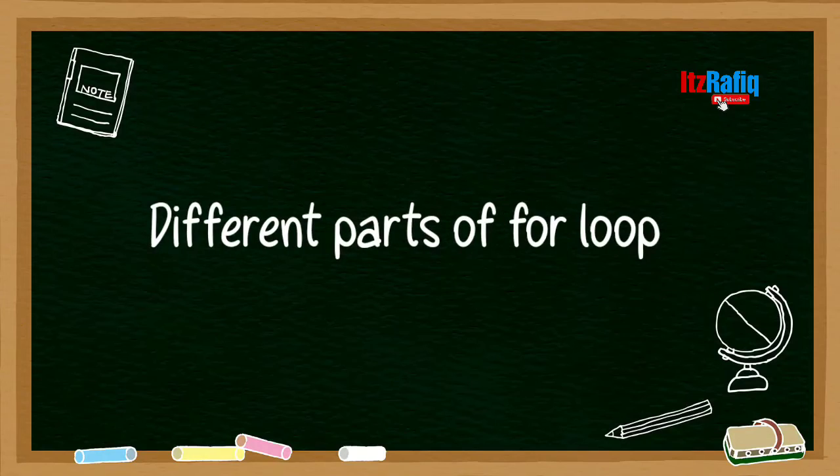Then can ask what are the different parts of for loop? Initialization, condition, increment and decrement.